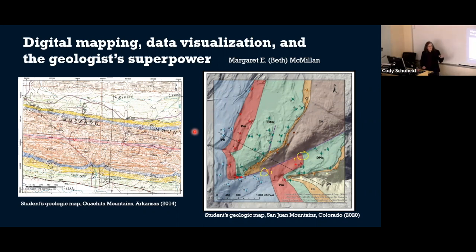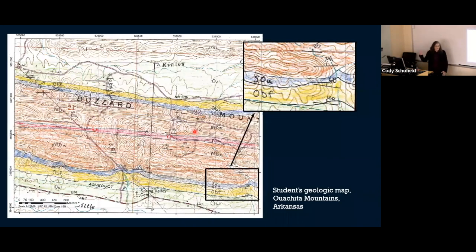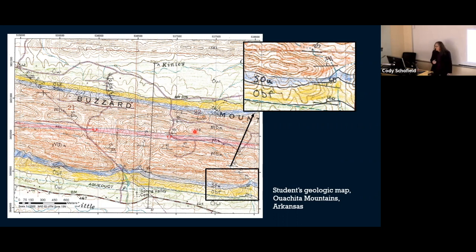The one on the left is the traditional paper-based geologic map — it is a data visualization with a lot of information conveyed. The one on the right is a digitally produced geological map, from start to finish. I was taught paper-based, even without a GPS unit — very low technology. The highest technology we had was the Brunton compass. We should certainly keep up with technology, right?